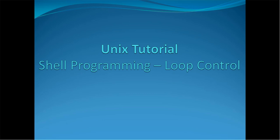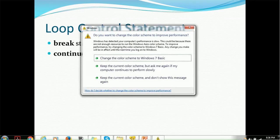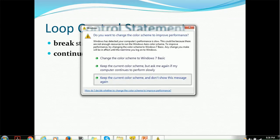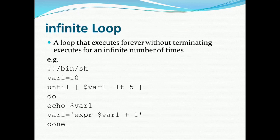Every language has their own approach, and the same is the case with Unix. Unix uses two statements: first is the break statement and second is the continue statement. Loop control statements are of two types: break and continue. You might have seen these kinds of statements in languages like Java, C++, C, or even .NET. On the same line, Unix also works — a finite loop is a loop that executes forever without terminating.